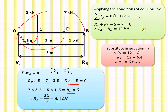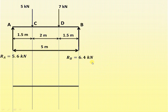Substituting the value of RB into Equation 1: RA = 12 − RB = 12 − 6.4 = 5.6 kilonewton. So RA = 5.6 kN and RB = 6.4 kN. Now we can draw the shear force and bending moment diagram.